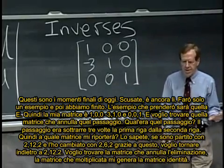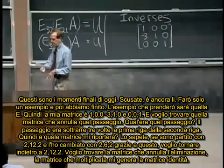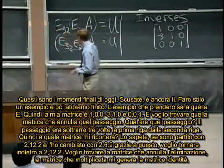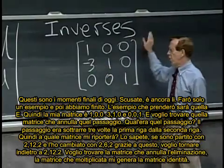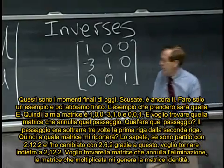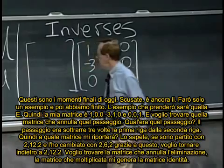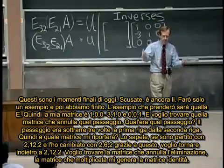And I want to find the matrix that undoes that step. So what was that step? The step was subtract three times row one from row two. So what matrix will get me back? What matrix will bring back, you know,